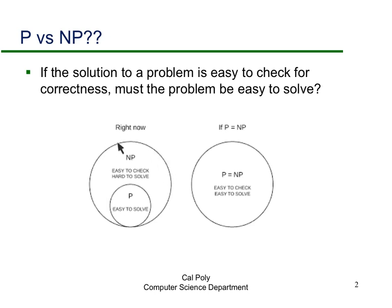Our current understanding shows problems that are easy to check but hard to solve, and problems that are both easy to check and easy to solve. What we don't know is whether P equals NP. If P equals NP, these sets are basically the same. If P is not equal to NP, there would still be distinctions to be made between the hard problems and the easier ones.